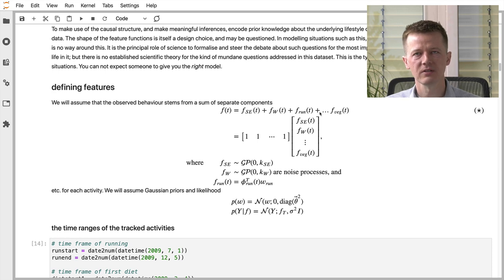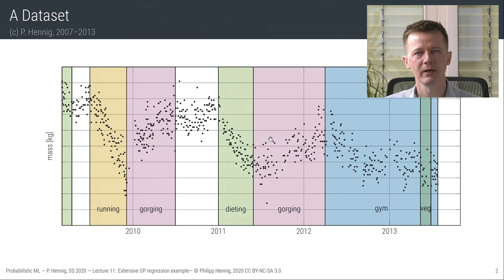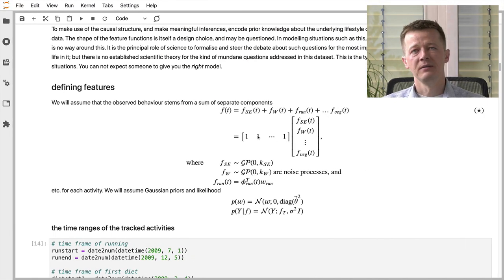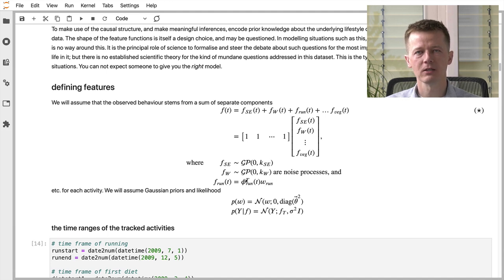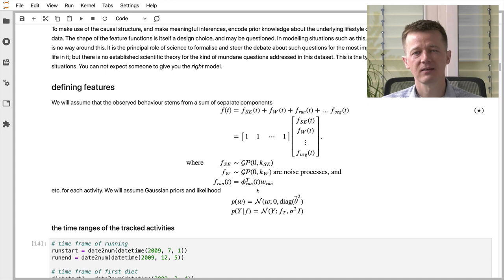There will be two noise processes: FSE (square exponential) and FW (Wiener), and five causal functions for the individual lifestyle choices: running, eating too much, trying to lose weight by dieting, going to the gym, and eating vegetarian. I'll assume each causal function is a simple parametric function — an inner product between an individual weight and a bunch of features. In general there could be several parameters, but I'll choose features such that there's only a scalar parameter for each.